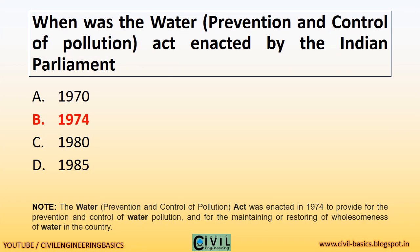When was the Water Prevention and Control of Pollution Act enacted by the Indian Parliament? 1974. The Water Prevention and Control of Pollution Act was enacted in 1974 to provide for the prevention and control of water pollution, and for the maintaining or restoring of wholesomeness of water in the country.